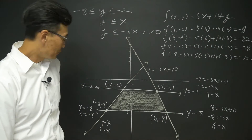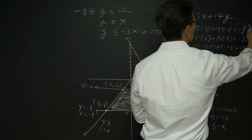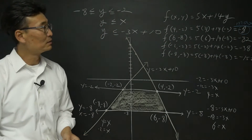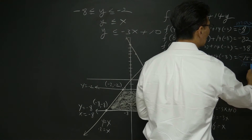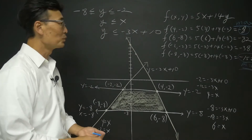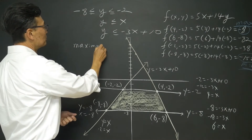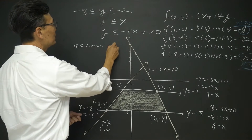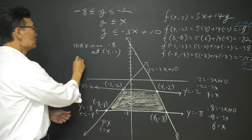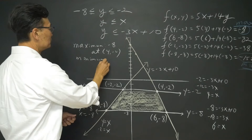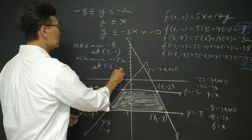From the values we've gotten, the maximum is negative 8 — that's our greatest value. And negative 152 is the minimum. So to finalize: the maximum is negative 8 at 4 comma negative 2, and the minimum is negative 152 at negative 8 comma negative 8.